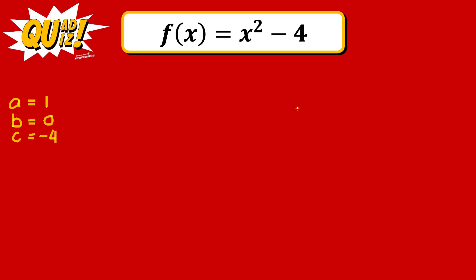These details include the vertex, concavity, and the minimum and maximum values, using the a, b, and c coefficients. The vertex is a point in the Cartesian plane — it is the point of inflection where the parabolic graph changes direction from either decreasing to increasing or increasing to decreasing. Using the coefficients, the x-coordinate of the vertex equals negative b over 2a, and the y-coordinate equals 4ac minus b squared over 4a.